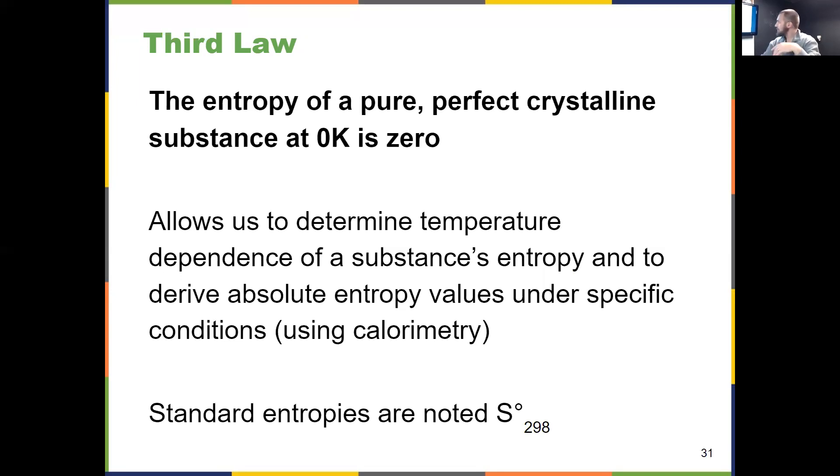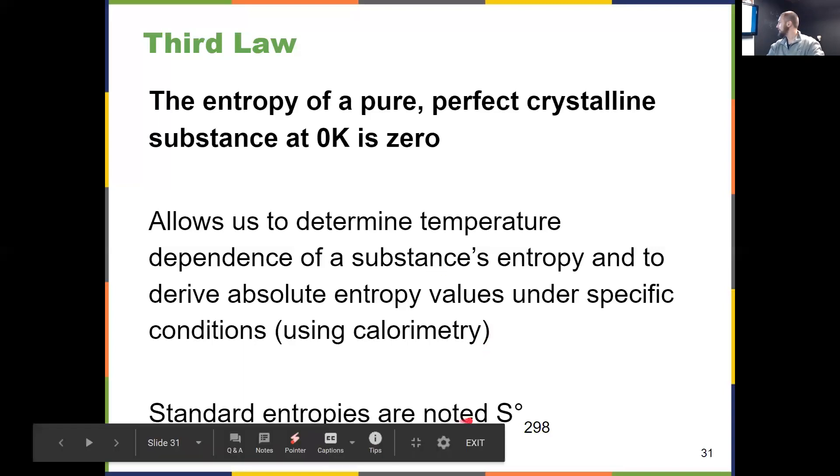These laws of thermodynamics allow us to determine the temperature dependence of something's entropy. If it's above absolute zero, which we'll always be dealing with, how does temperature affect entropy? We can derive entropy values under specific conditions. We're typically thinking about standard molar entropies. Recall from chapter five: standard state is one mole of substance at one bar pressure, 298 Kelvin. That notation S°₂₉₈ tells you you're at standard state and 298 Kelvin.